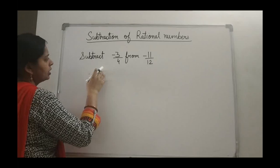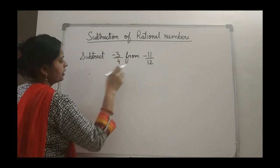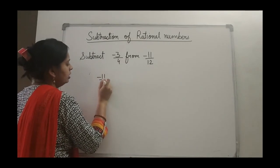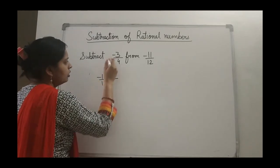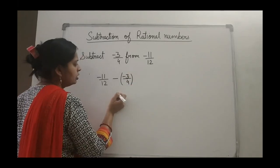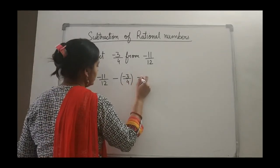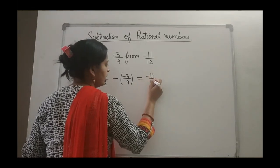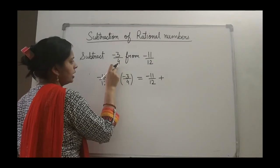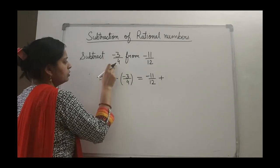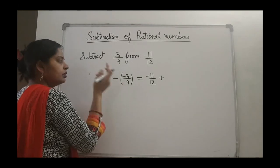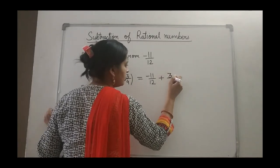Now subtract minus 3 by 4 from minus 11 upon 12. From minus 11 upon 12 we subtract minus 3 upon 4. The first number is minus 11 by 12, and then we do the addition of the additive inverse of the number to be subtracted. The additive inverse of minus 3 by 4 is plus 3 by 4. So we write minus 11 by 12 plus 3 by 4.